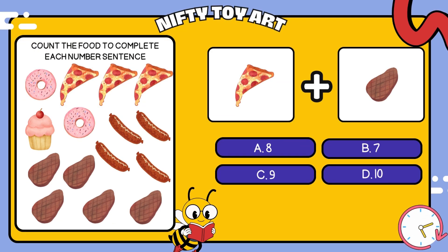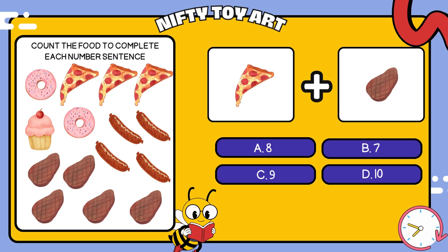We have pizzas and steaks. How many foods is that in total? That's right, eight.